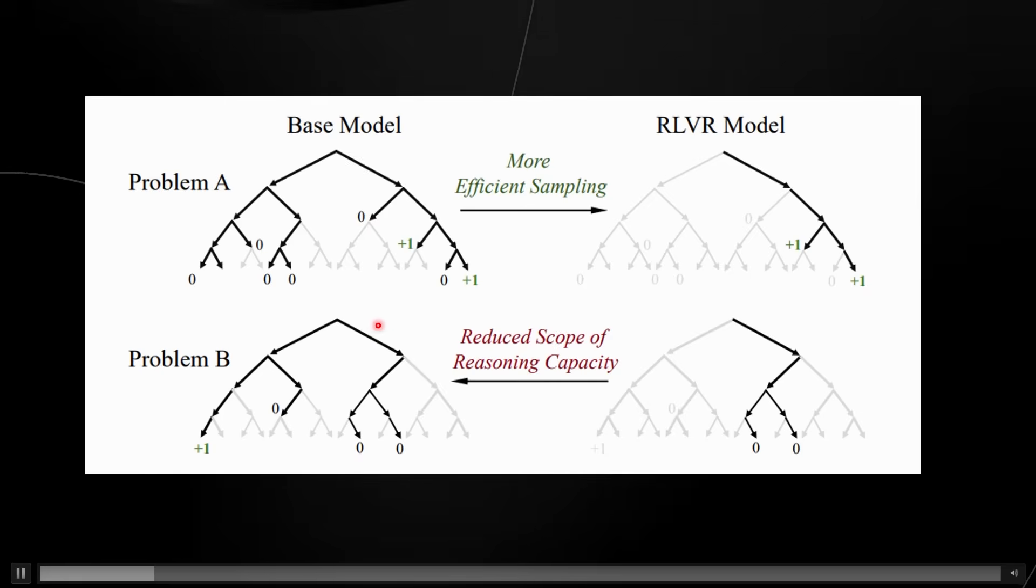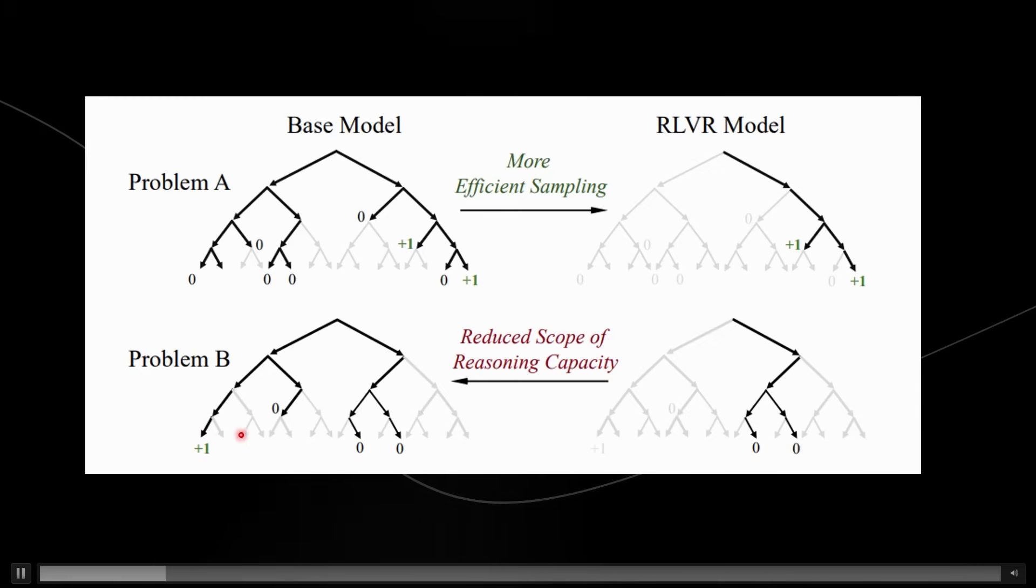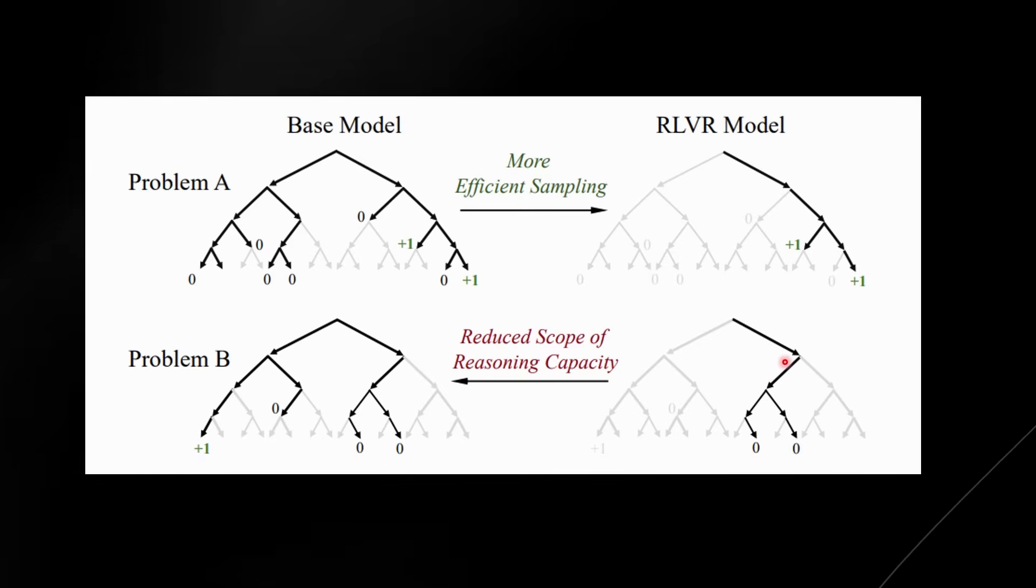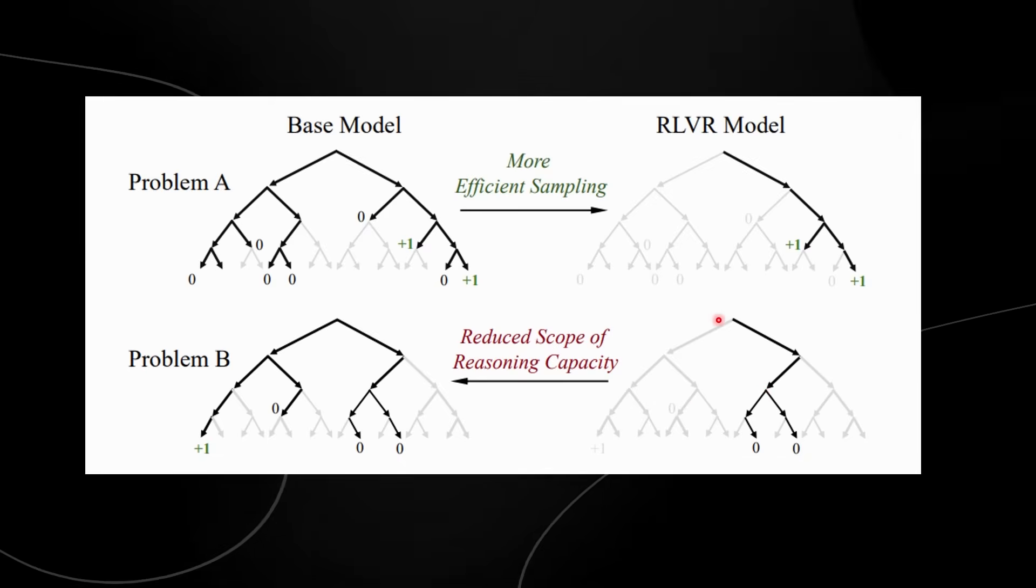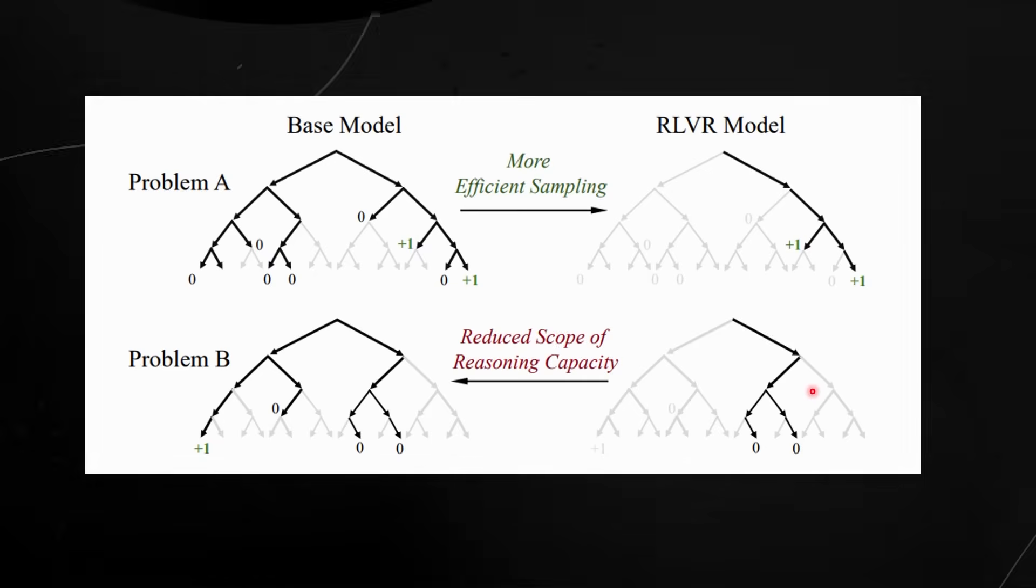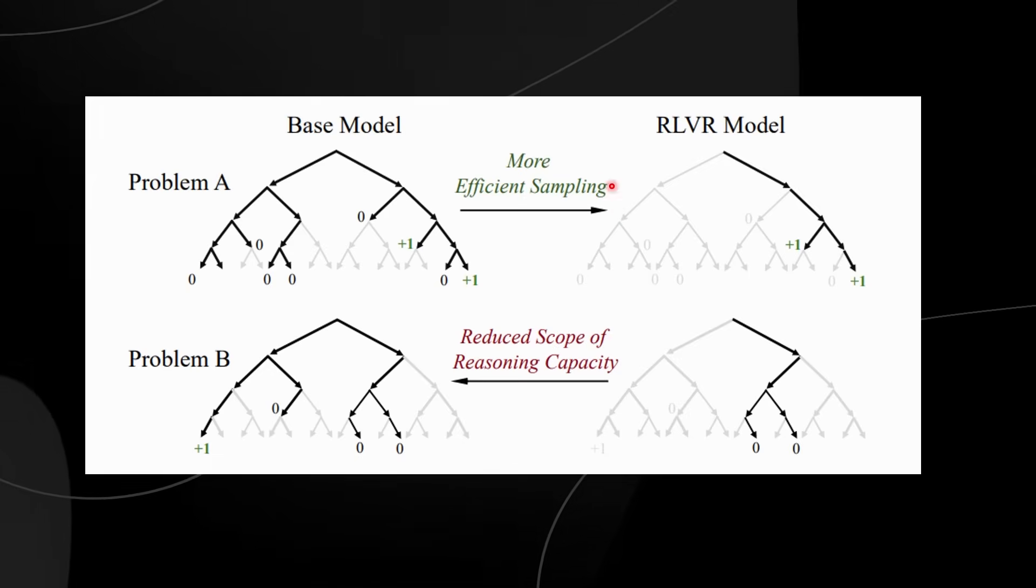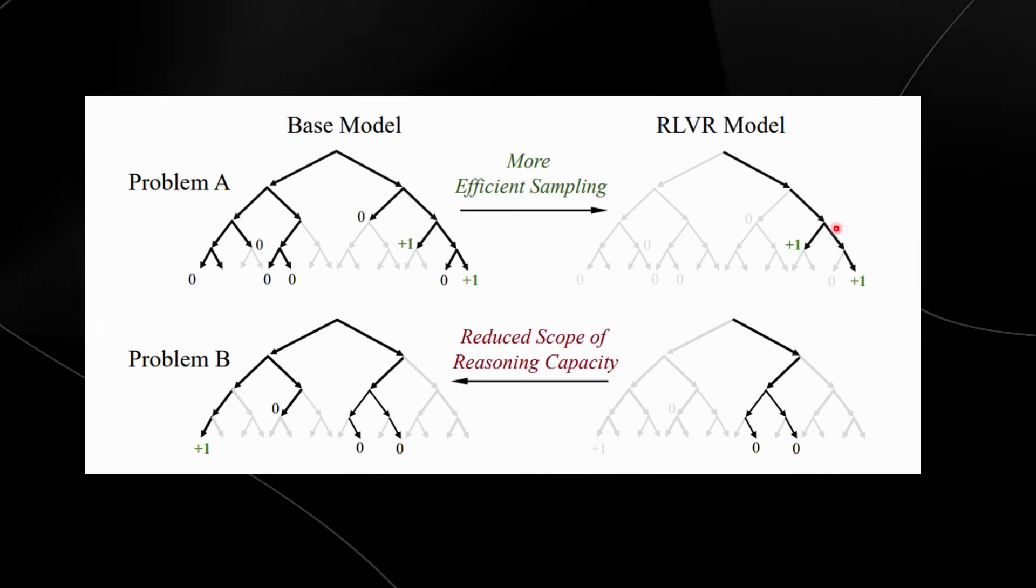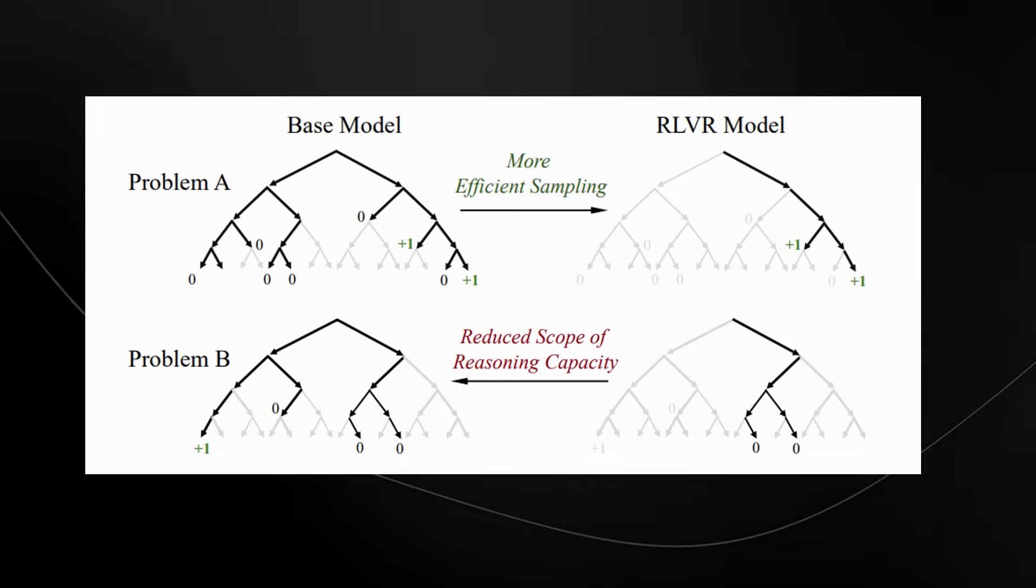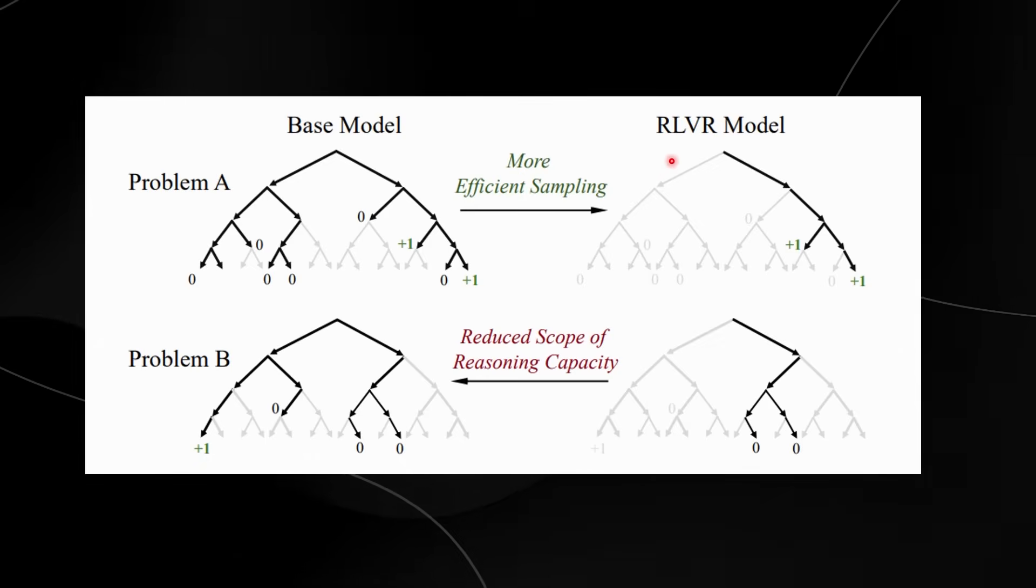Now this is where we have Problem B, which is the reduced scope of reasoning capacity. This is where the base model here still explores lots of reasoning paths and one of them leads to the right answer. Whereas when we have the reinforcement learning model that had been trained to focus on only the most rewarding path from training, this time it misses the answer completely. We can see here that this is unfortunate. When the answer was over here, the model that was trained to go down this way, it completely missed it. So this is unfortunately a bad outcome. Reinforcement learning has made the model too narrow and it misses some correct answers that it used to be able to find.